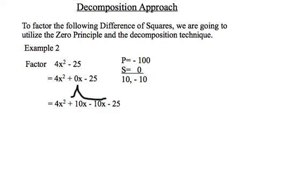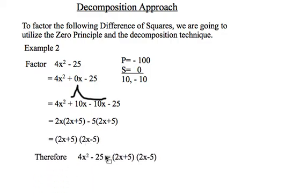And then I can now group factor. So out of the first two terms I have a common factor of 2x. The second set of terms I have a common factor of negative 5. Remember that I want what's inside the brackets to be exactly the same so that on my last line I can common factor it. So therefore 4x squared minus 25 is the same as 2x plus 5 times 2x minus 5.